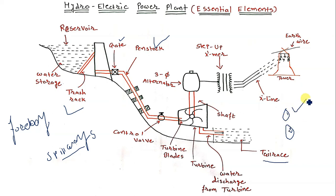Under impulse turbines there is the Pelton wheel turbine and the Turgo turbine. Under reaction turbines there is the Francis turbine and the Kaplan turbine. All have different constructions and applications, but in hydroelectric power plants the Kaplan turbine sees more use.